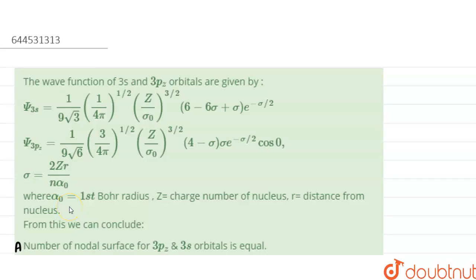The question gives the wave functions for 3s and 3pz orbitals. These are the wave functions for 3s and 3pz orbitals, where sigma is equal to 2Zr upon n·a₀, where a₀ is the first Bohr radius, Z is the charge number of the nucleus, and r is the distance from the nucleus.